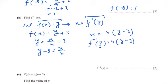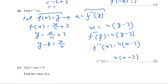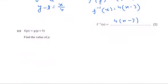We have to find f inverse of x, so we replace y with x. The final answer will be f inverse(x) = 4(x - 3). Now move to part c.